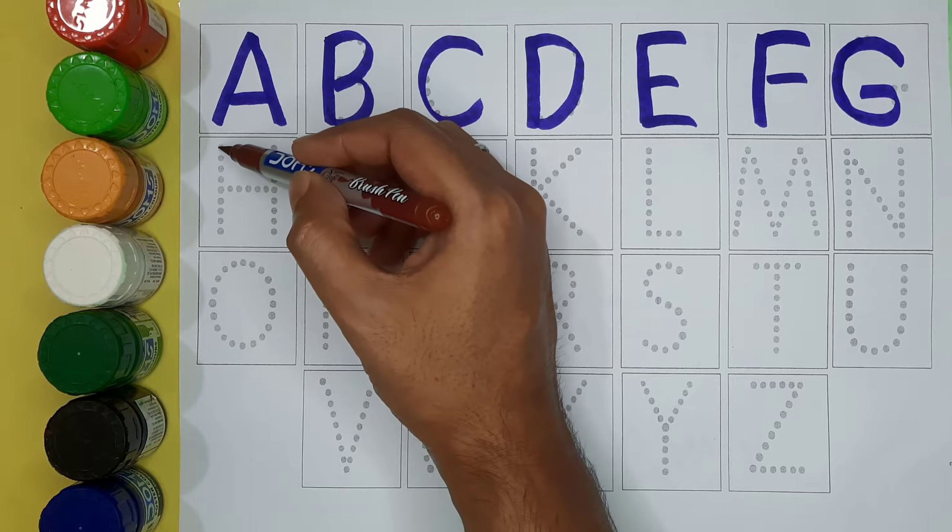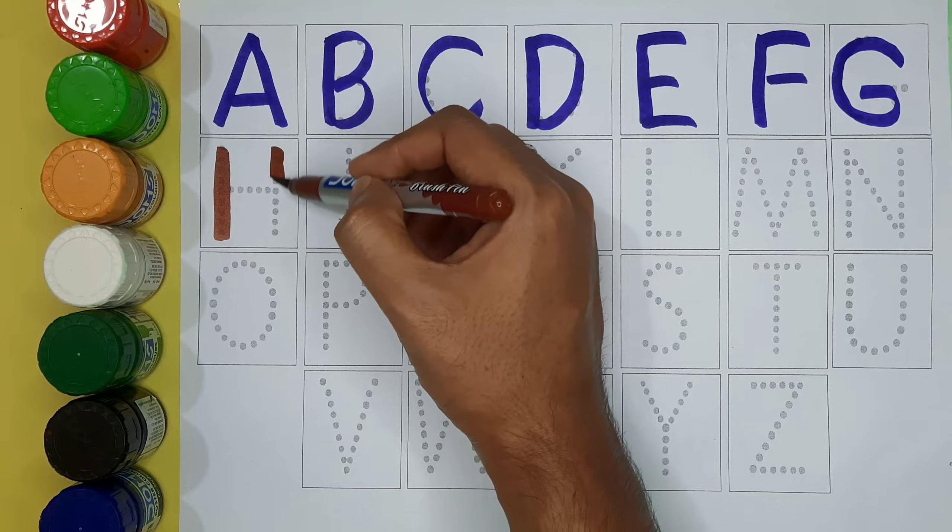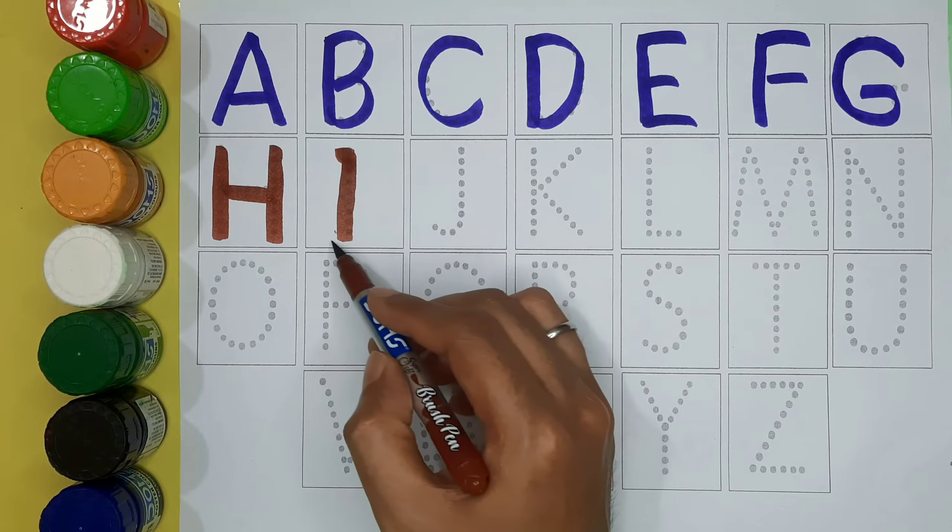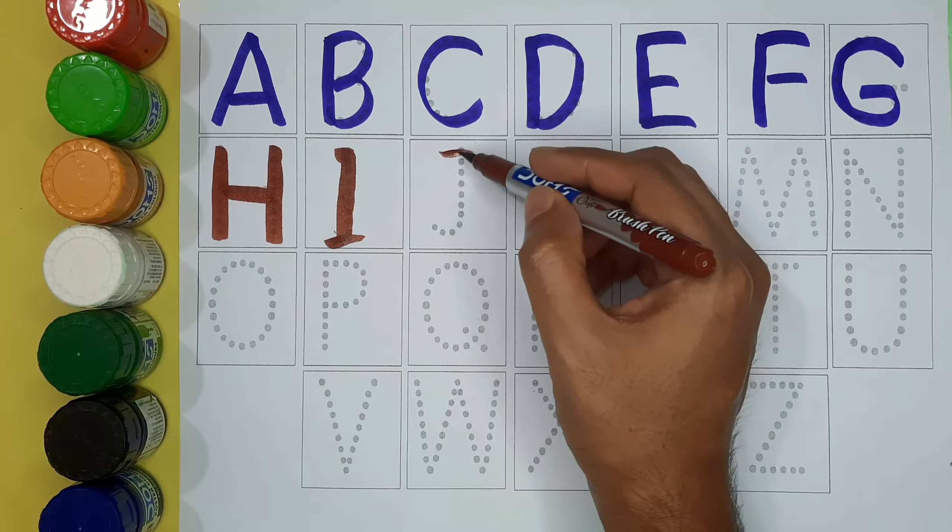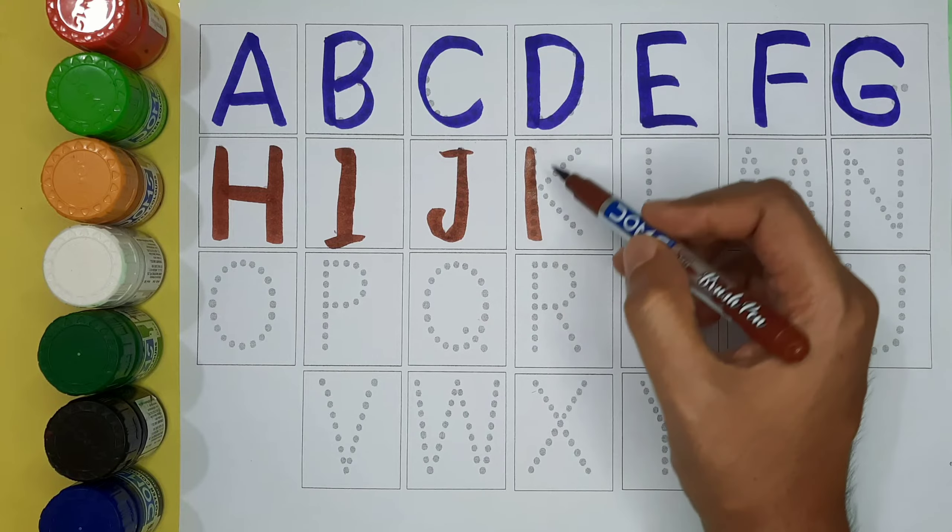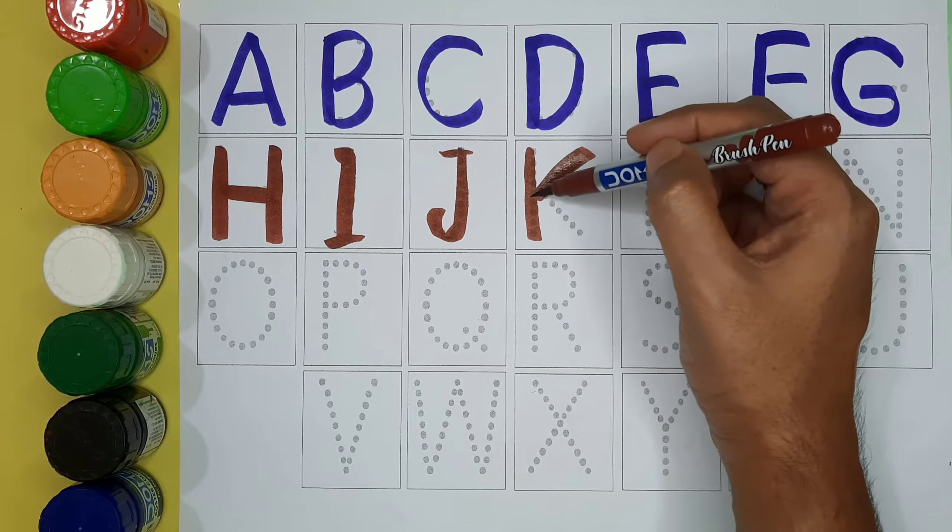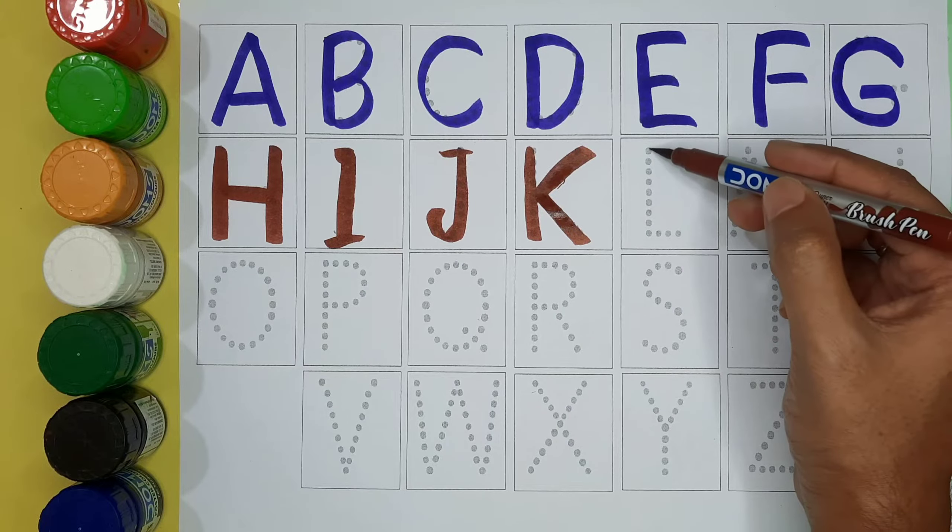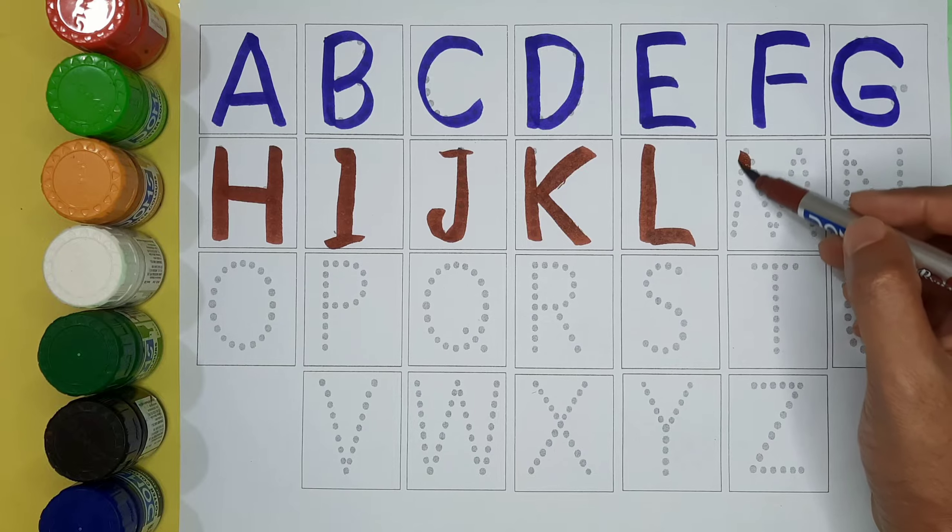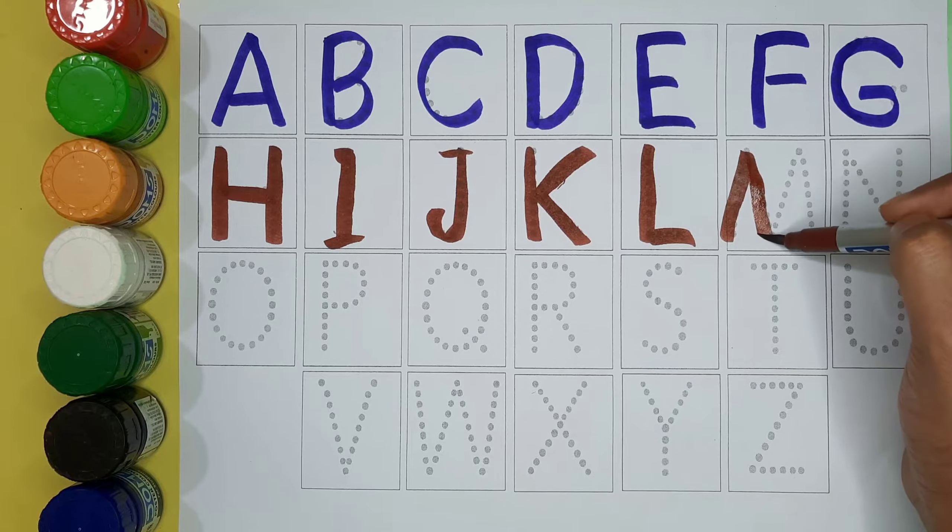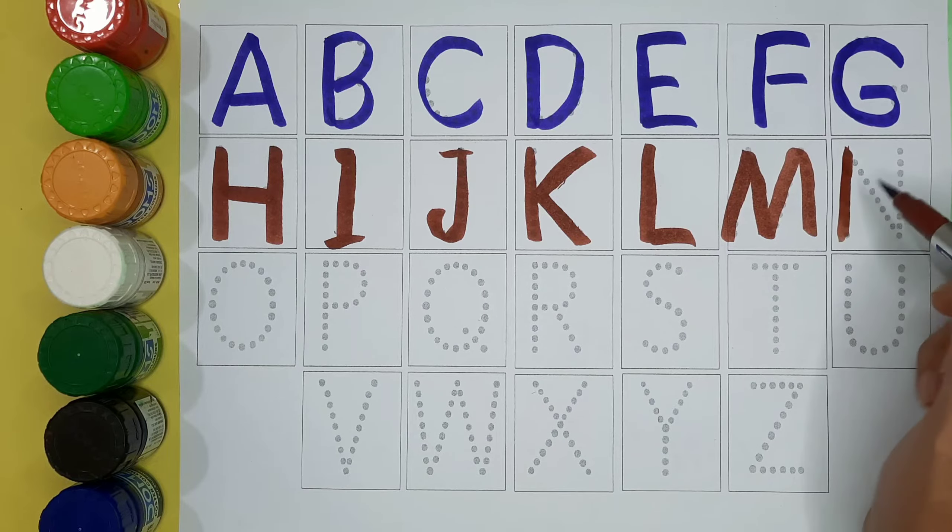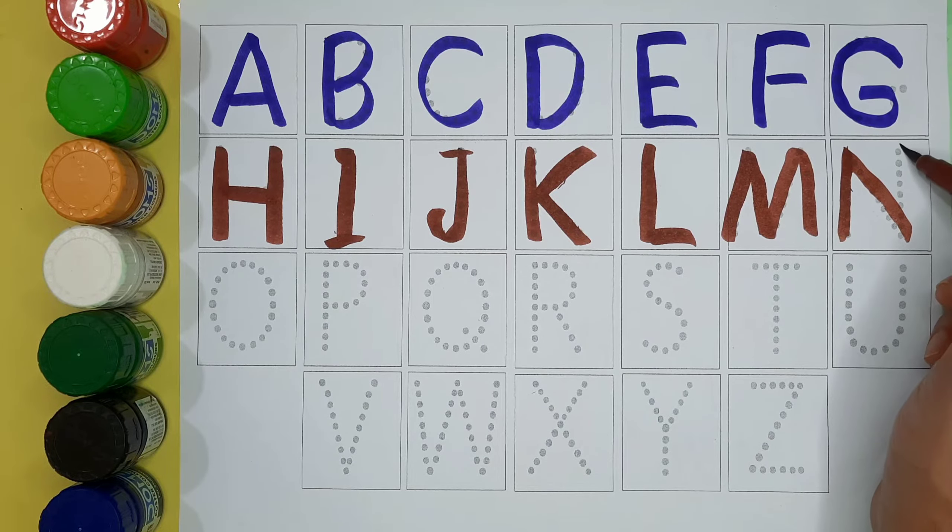Brown color, brown color. H, H for horse. I, I for igloo. J, J for Zeus. K, K for kangaroo. L, L for lion. M, M for monkey. N, N for necklace.